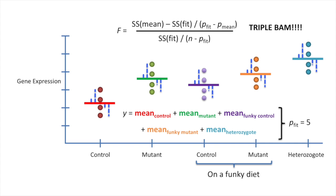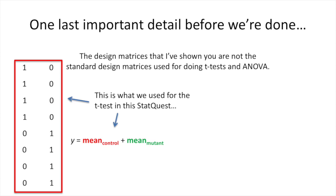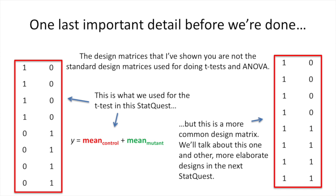If we can calculate F, then we've got ourselves a p-value. One last important detail before we're done. The design matrices that I've shown you are not the standard design matrices used for doing t-tests and ANOVA. This is what we used for the t-test in this StatQuest, but this is a more common design matrix for the same thing. Both design matrices will get the job done — it's just the one on the right is more commonly used. We'll talk about this one and other more elaborate designs in the next StatQuest.